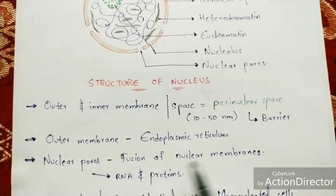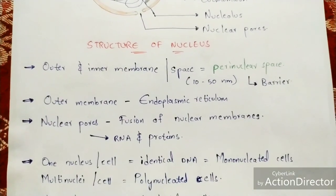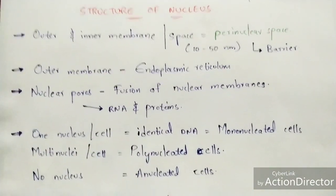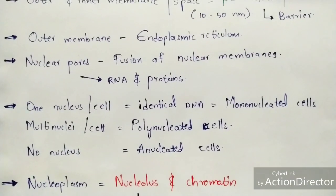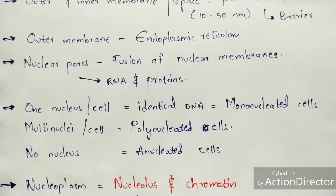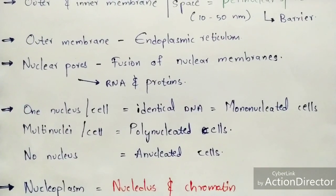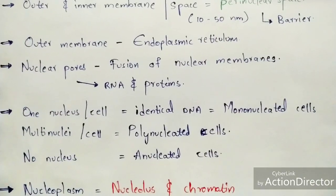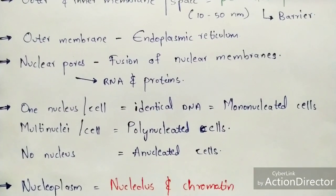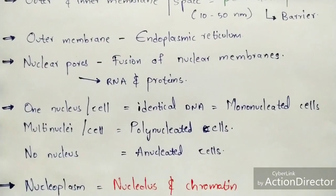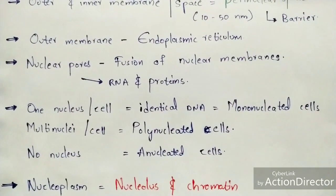The RNA molecules as well as protein molecules get transported through nuclear pores, and RNA is normally synthesized inside the nucleus. In one cell, one nucleus is present — this is called a mononucleated cell, and that nucleus consists of identical DNA. Cells with more than one nucleus are called polynucleated cells. Cells without any nucleus are called anucleated cells, and the best example of anucleated cells are erythrocytes — that is, red blood cells — which do not consist of any nucleus.